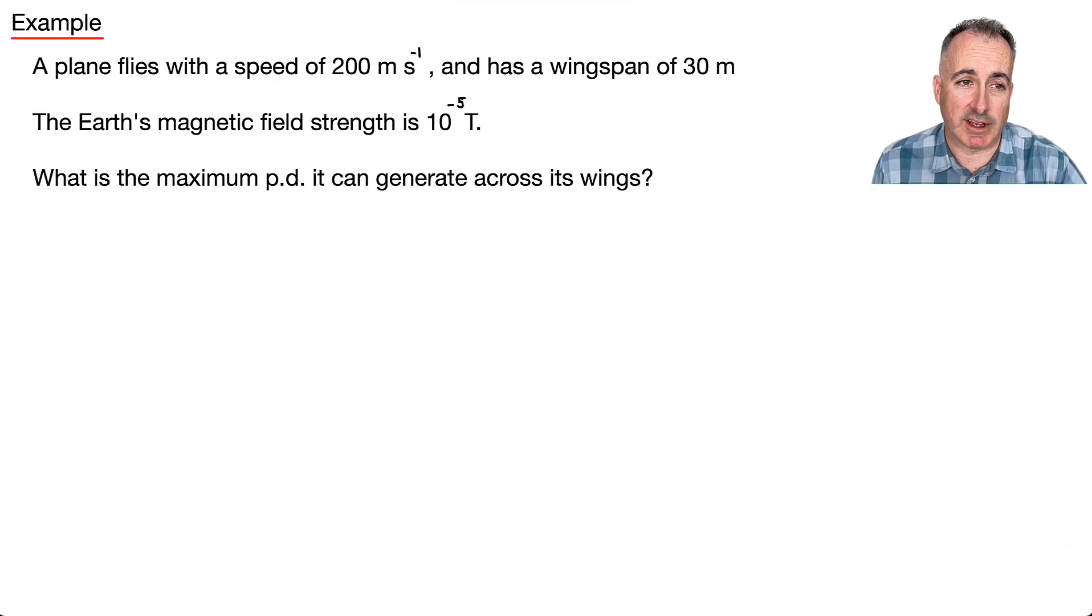So a nice simple example of this would be, well, you have a plane and it's flying with a speed of 200 meters per second. Let's say it has a wingspan of 30 meters. And we're told the Earth's magnetic field strength is 10 to the minus 5 Teslas. That's actually what it is. It's very, very small. Well, how's this? It's because one Tesla is a really big number. But what's the maximum potential difference it can generate across its wings? In other words, this right here is going to be our induced EMF. And it's really, really simple. All you have to do is just get this equation of B, V, L. You just put those in. Because your maximum potential difference will be your EMF. So let's see. We'll just put in our numbers and that's it.